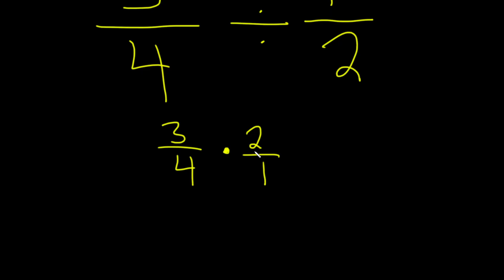Alright, now we can do some cancellation here. This is equal to 3 over 2, because 2 goes into 4 two times, and 2 goes into 2 one time. So we have 1 over 1.